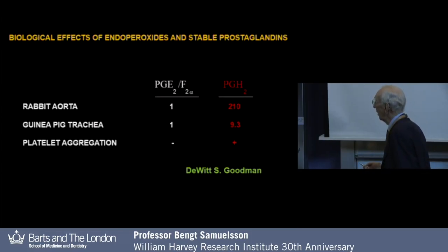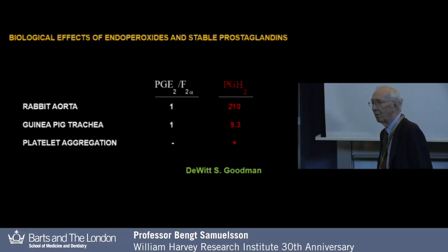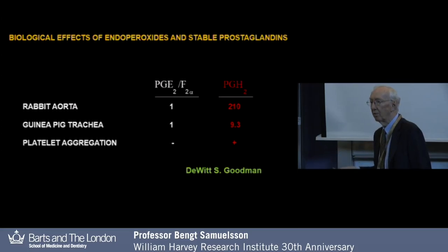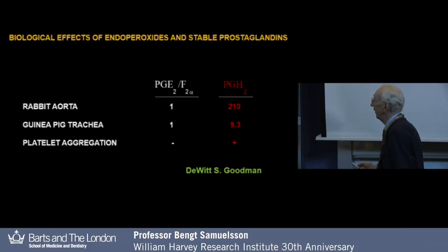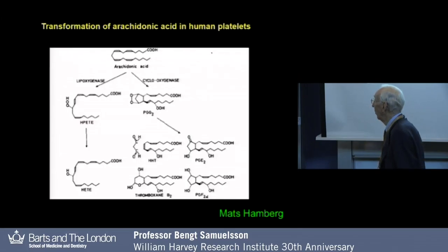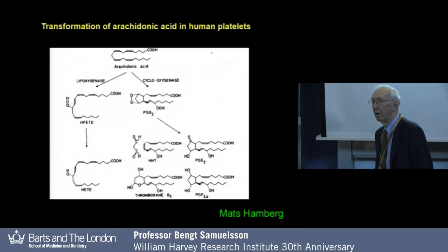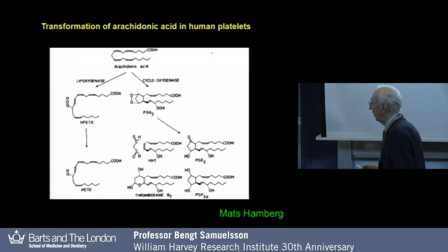And showed, to our surprise, that PGH2 was much more active than any of the known prostaglandins, which indicated to us that it was either the endoperoxides or some new products from endoperoxides — the intermediate — that had these actions. Especially interesting was that PGH2 aggregated platelets. We worked very hard on characterising arachidonic acid metabolites in platelets, but none of them could aggregate platelets.